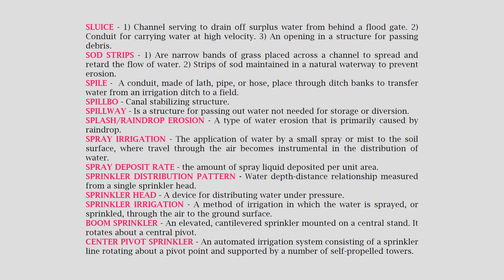Spile: a conduit made of lath, pipe, or hose placed through ditch banks to transfer water from an irrigation ditch to a field. Spillway: a structure for passing out water not needed for storage or diversion. Splash raindrop erosion: a type of water erosion that is primarily caused by raindrop impact.